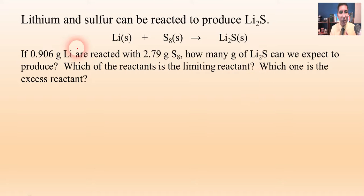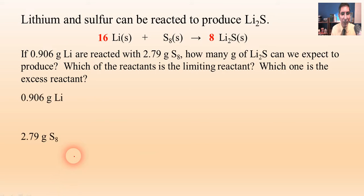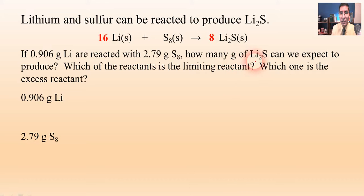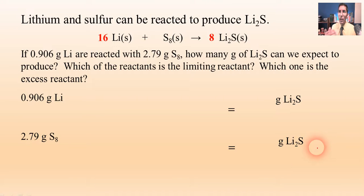Here's the plan for working these problems. You're going to take both reactants — the 0.906 grams of lithium and the 2.79 grams of sulfur — and carry out the three-step process for both of them. So I'm going to write both values down and convert both to grams of Li2S. I'll have to do the three-step process twice, and then I'll have two answers. The smaller answer is going to be the correct one — the amount of product we can actually expect to produce.